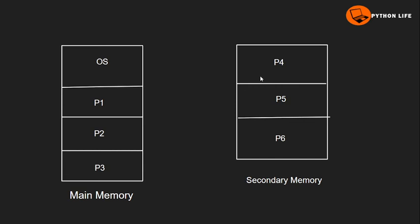For example, we have the P4 process in secondary memory. Now the CPU needs to execute the P4 process, so we perform a swap in and bring P4 into main memory.